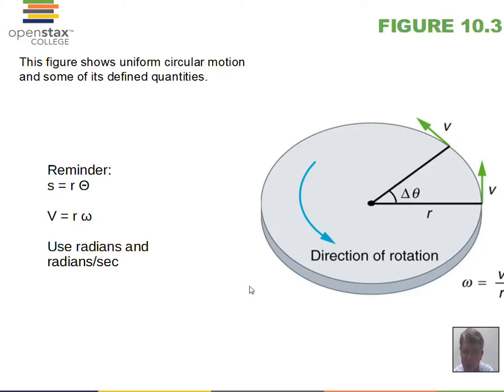We've worked with circular motion before. We talked about a radius R for a circle and a central angle — I'll just use theta instead of delta theta — and the velocity that's tangent to the circle. There are connections between the linear distance along the arc of the circle and theta. That connection is the factor of R: S equals R times theta. The arc length equals the radius of the circle multiplied by the central angle.